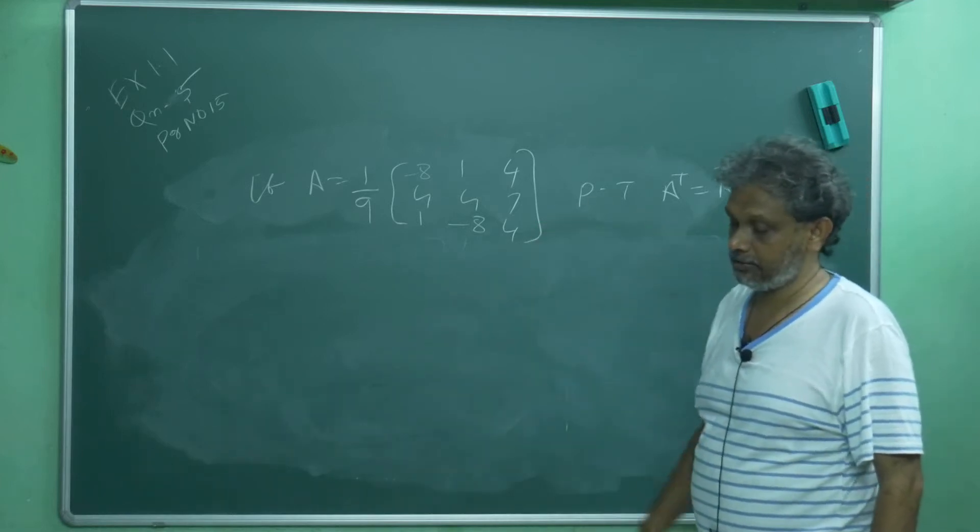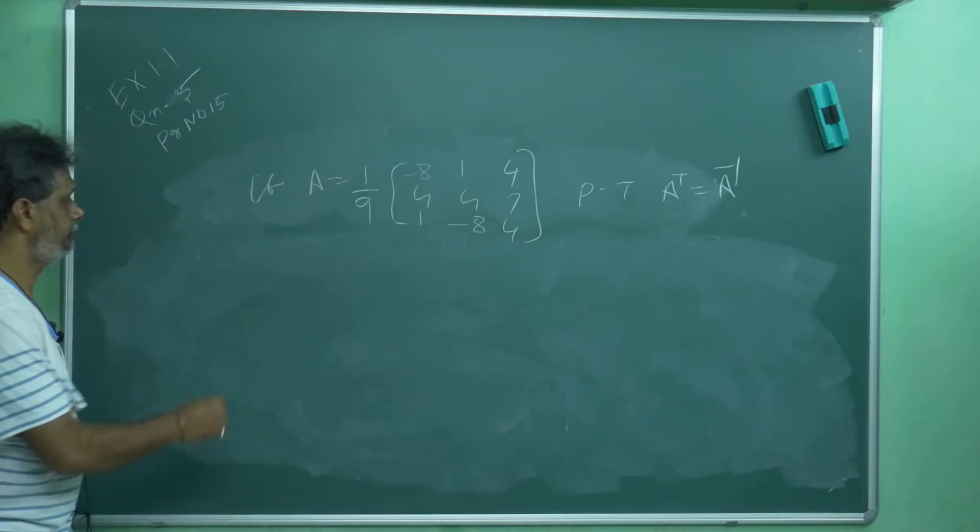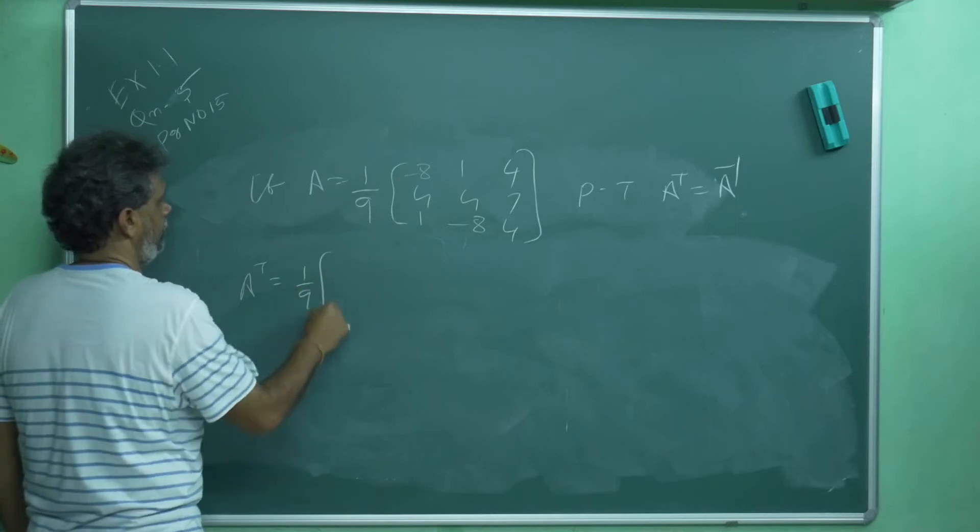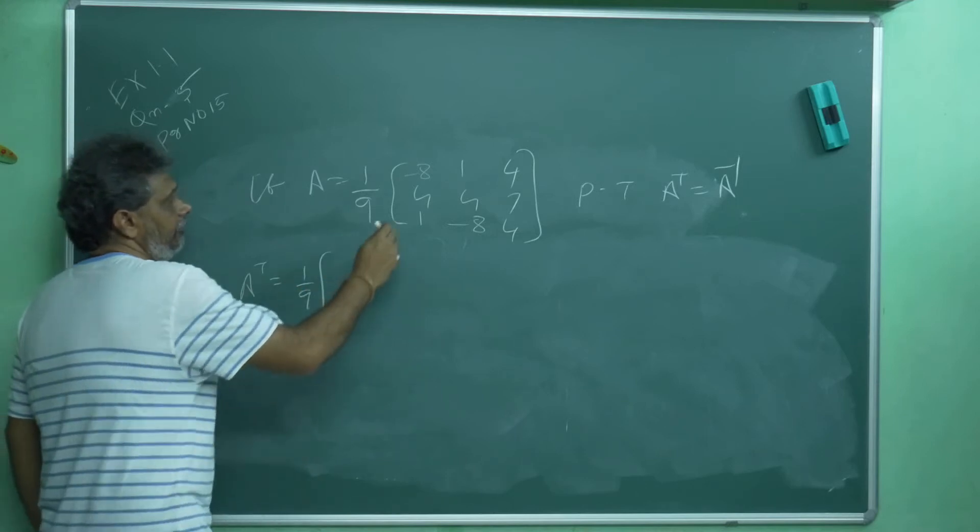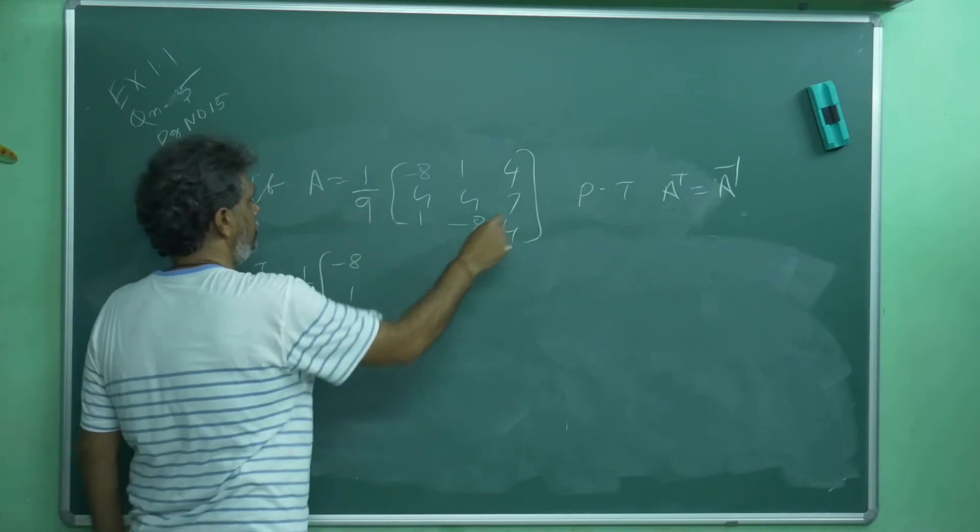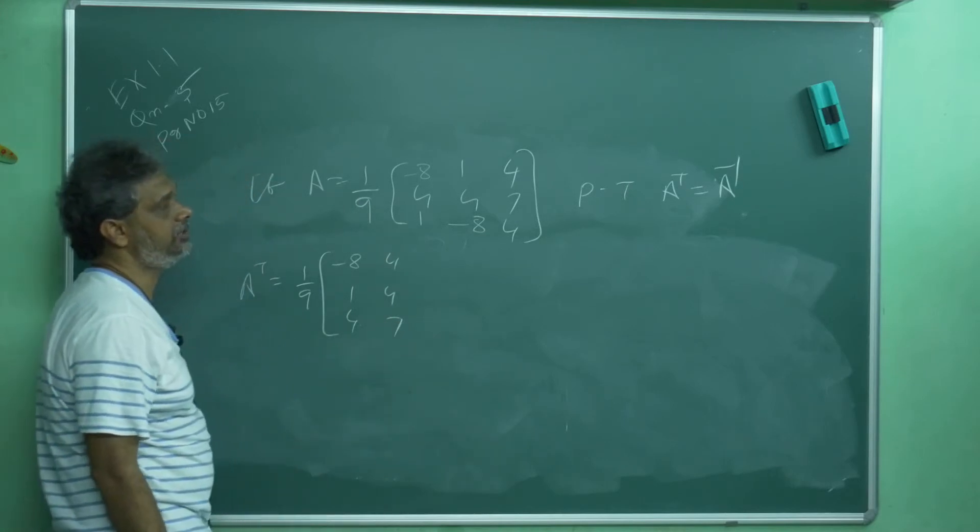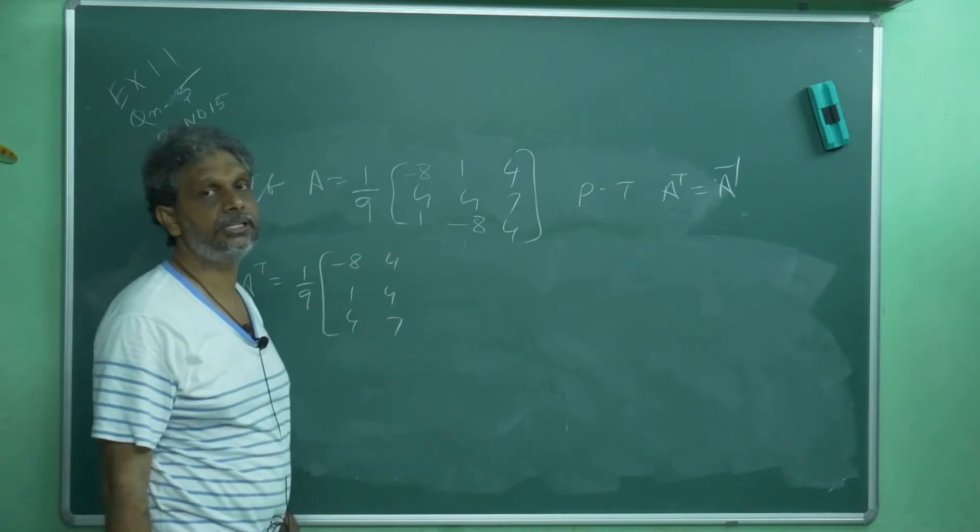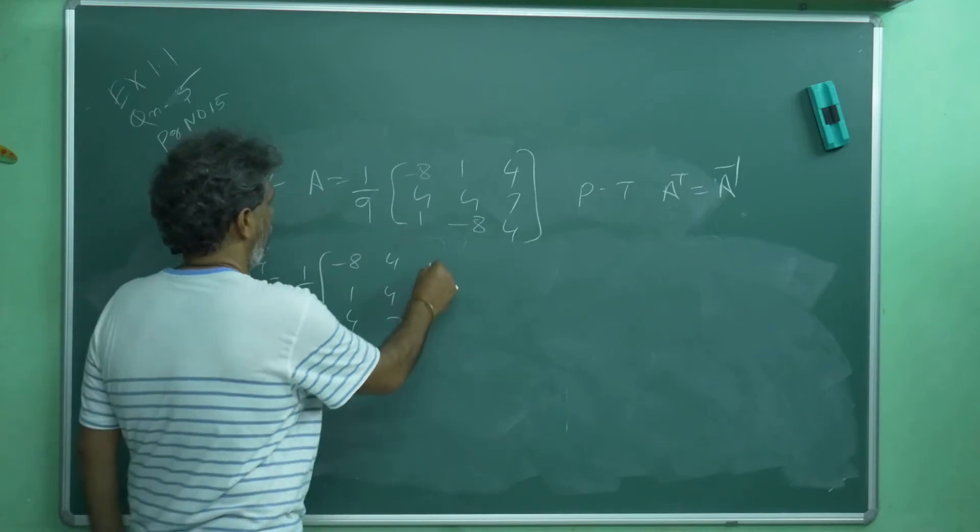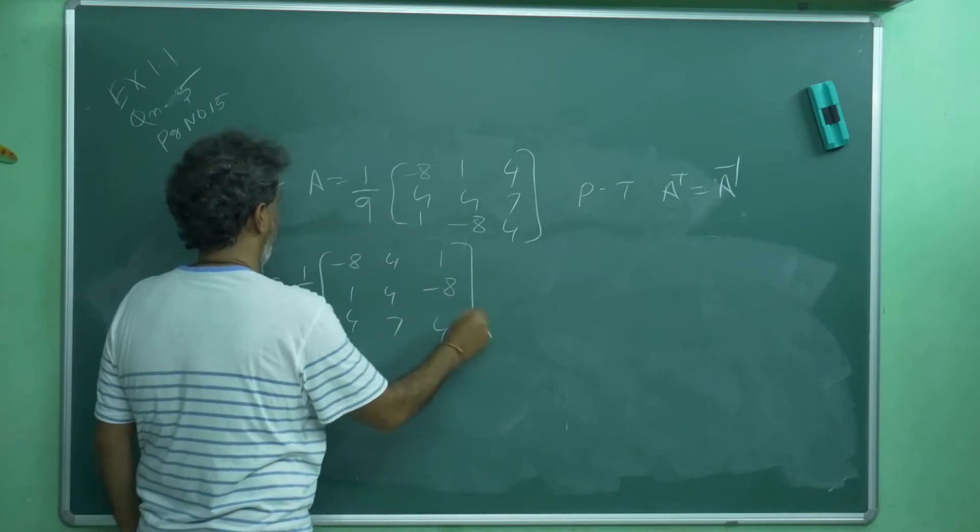A is already in your hand. First, you can find A transpose. How you will do A transpose? 1 by 9. First row you can write as first column. Second row you can write as second column. Transpose means rows you can write as columns, columns you can write as rows. This is A T.